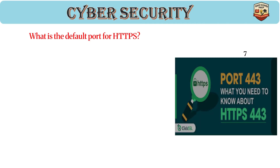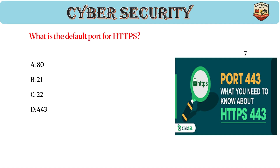What is the default port for HTTPS? Answer: D, 443. HTTPS operates on port 443, uses SSL/TLS for encryption, and secures HTTP communication over the Internet.